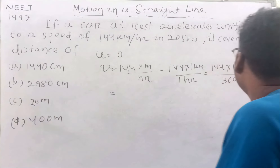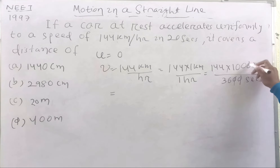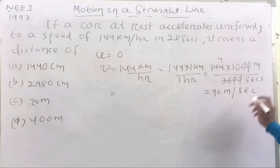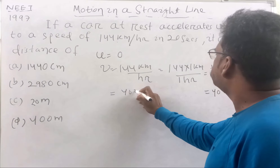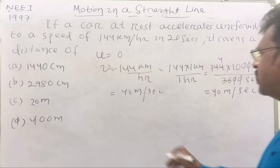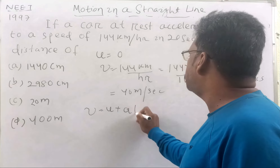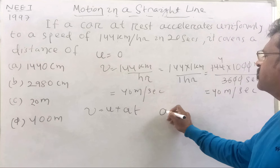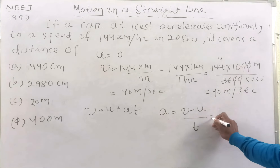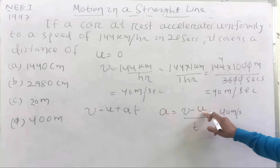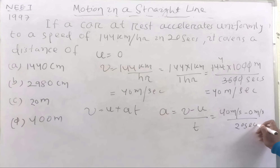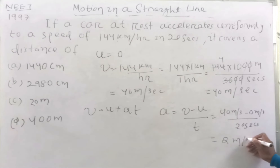So we convert it to SI units. This is the final velocity of the car. We use the equation of motion: v = u + at. Here, v = 40 m/s, u = 0 m/s, and time t = 20 seconds. So acceleration a = 40 divided by 20 = 2 m/s².